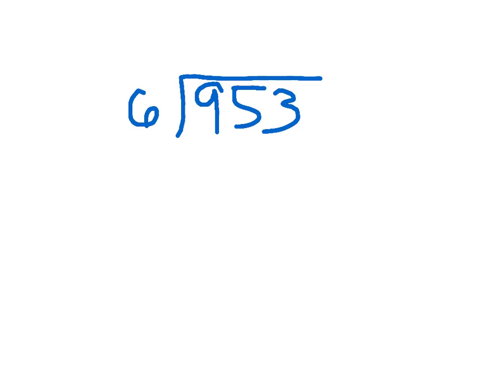Let me show you another problem where we have 953 divided by six. Again, we start with the hundreds place. Nine divided by six, which is one. One times six, which is six. And nine minus six, which is three.